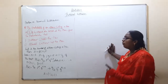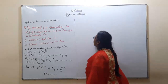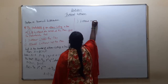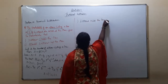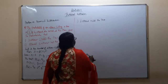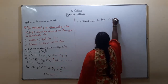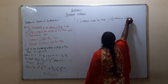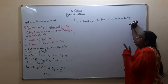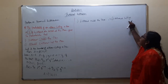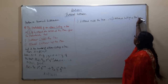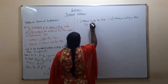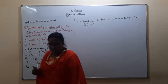We need to solve the problem. First: 3 arrows missing the tree. If 3 arrows miss, that means 1 arrow is hitting the tree. So the possibility of hitting is 1 out of 4. So we need P(x = 1).